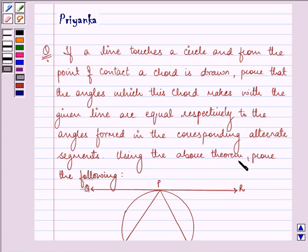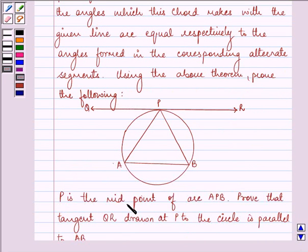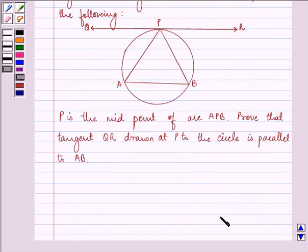Now using the above theorem, we need to prove the following. P is the midpoint of arc APB. Prove that tangent QR drawn at P to the circle is parallel to AB.